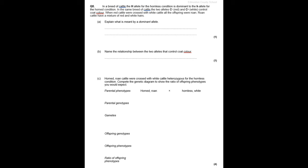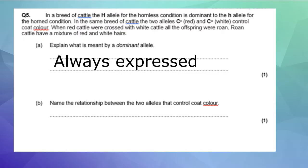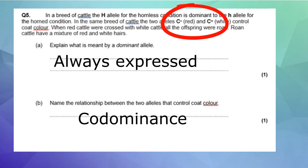For question B, name the relationship between the two alleles that control coat color. Well, remember from our superscript, we have two there. So it is suggesting to us that it's co-dominance. It shouldn't be dihybrid inheritance, because then we'll be looking at two characteristics when the question they said control coat color.